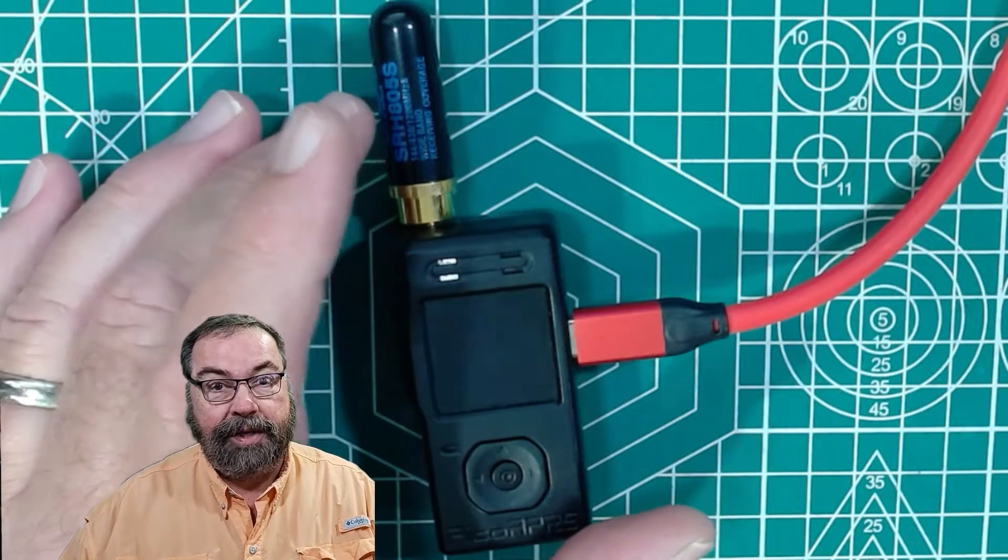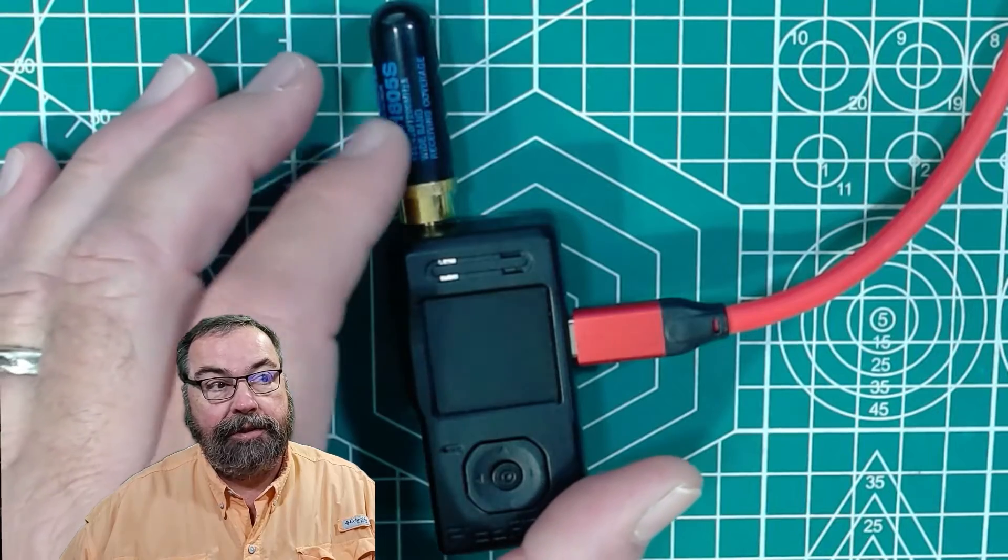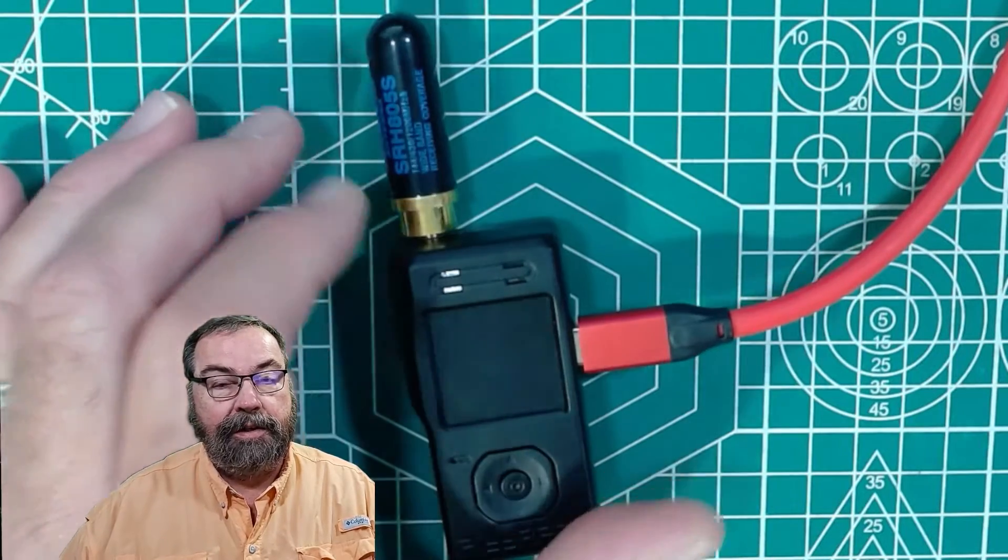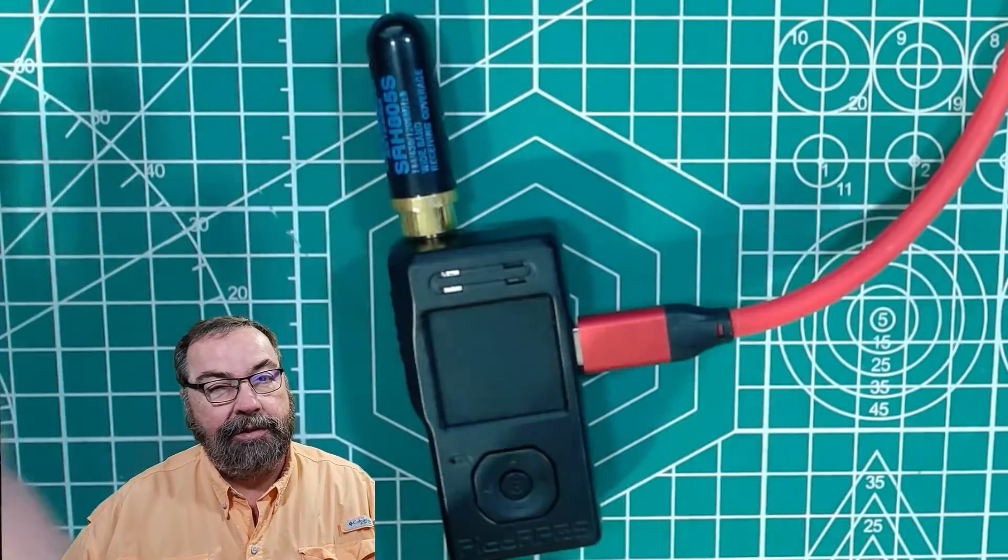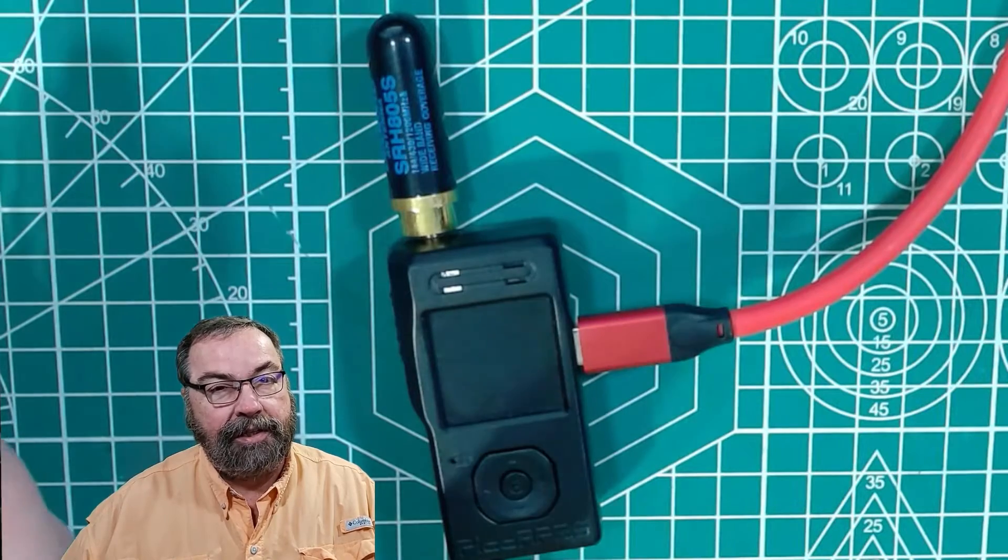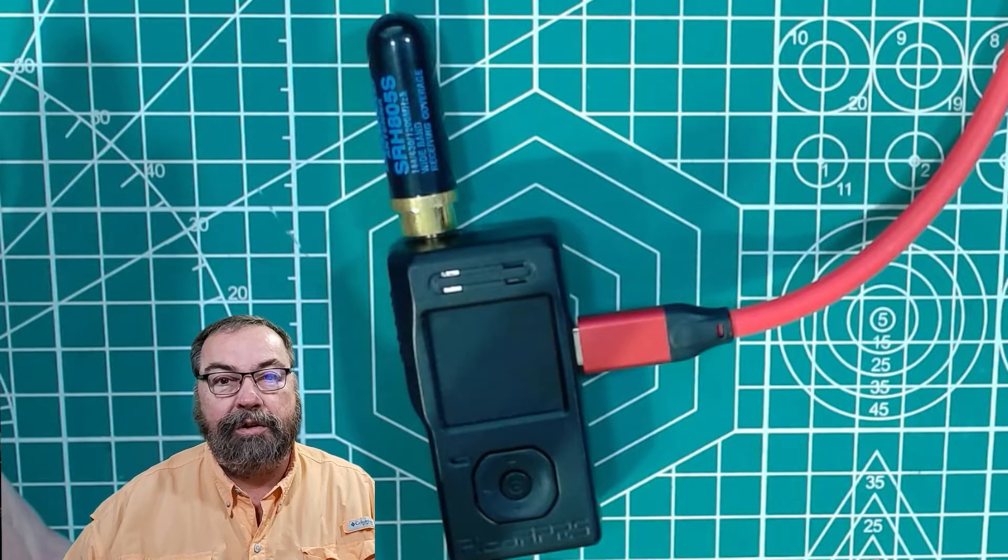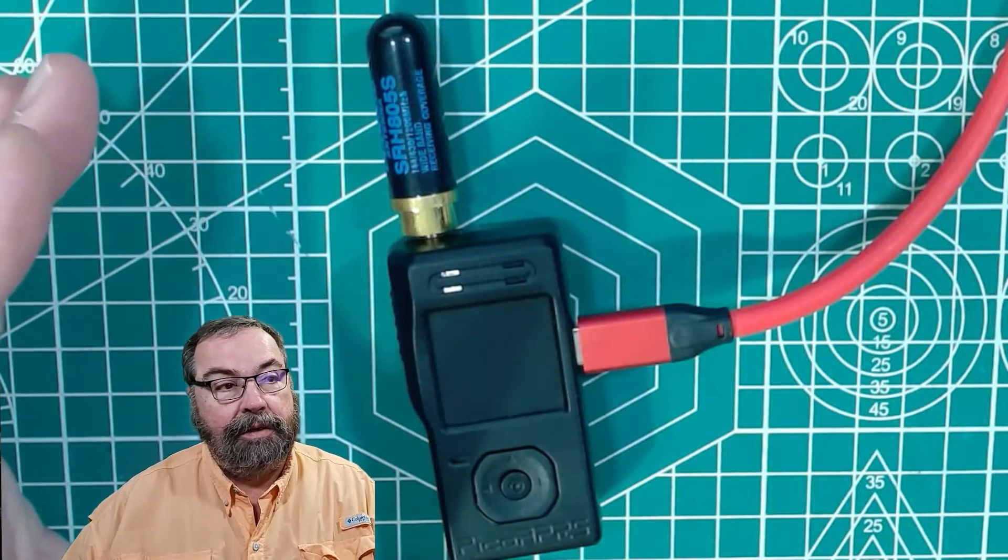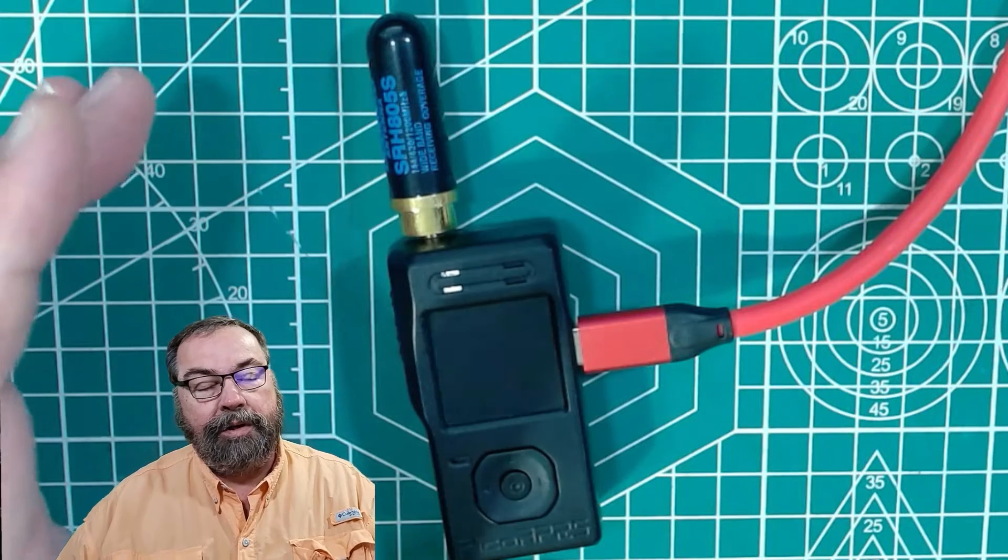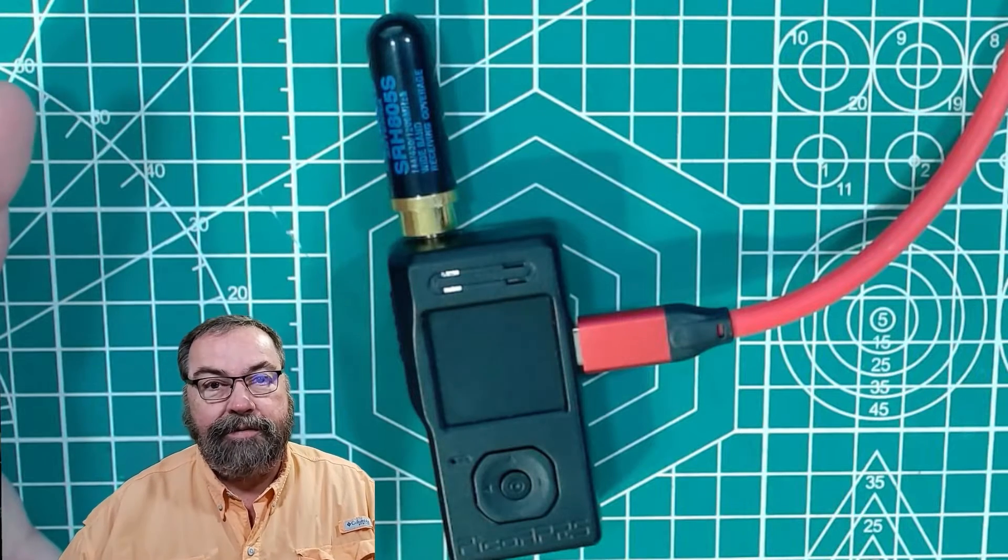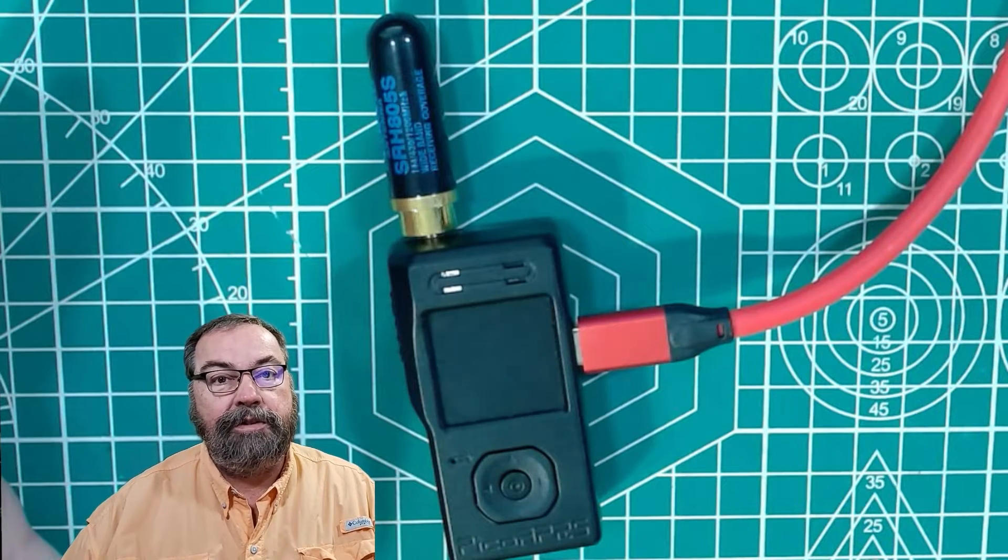I bought this used off of eBay from a gentleman and he included two of these style antennas. According to documentation, they say you should use a real HT style antenna or if you're using this in a vehicle, you probably want to connect it to an external antenna for better reception. What does this thing do? Well, it does APRS. It does everything with APRS that you can think of to do with APRS.